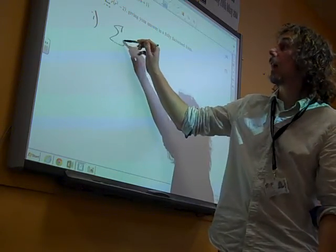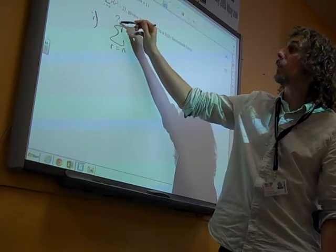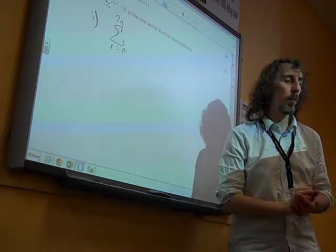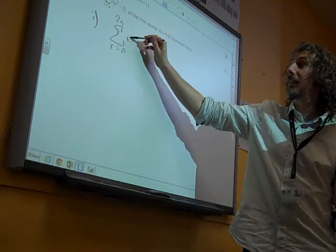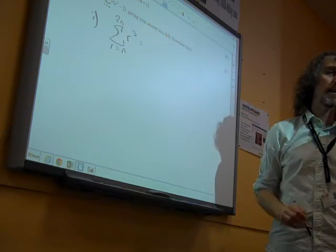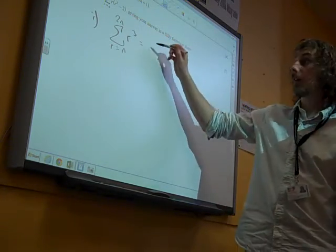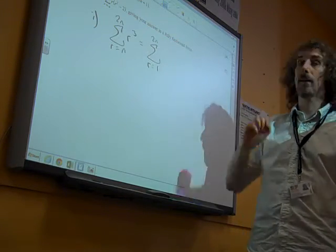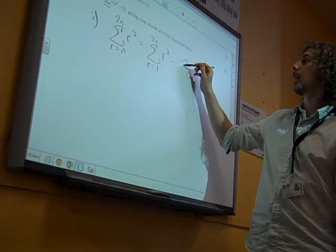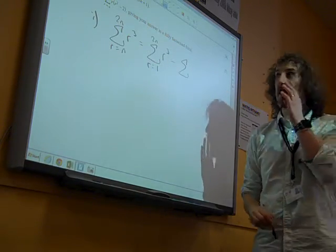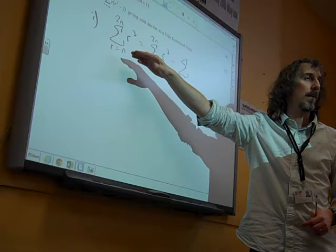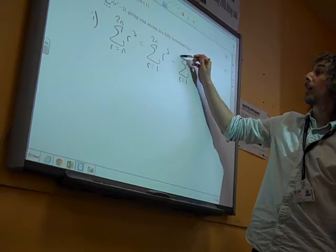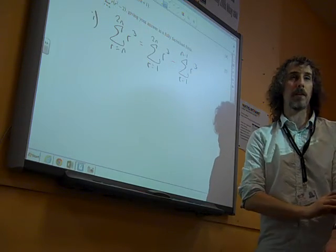OK, so we're doing the sum as R goes from N to 2N. Now think what this means as we do the sum from N to 2N. It's like doing the sum all the way from 1 up to 2N, but then we need to take some of it away.